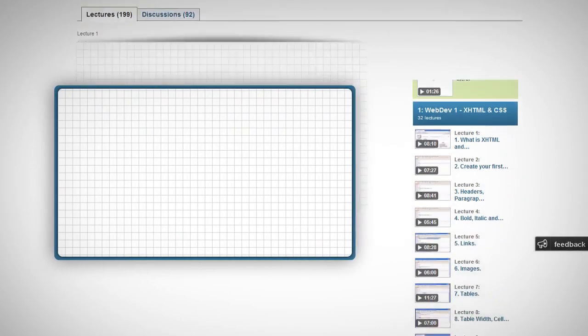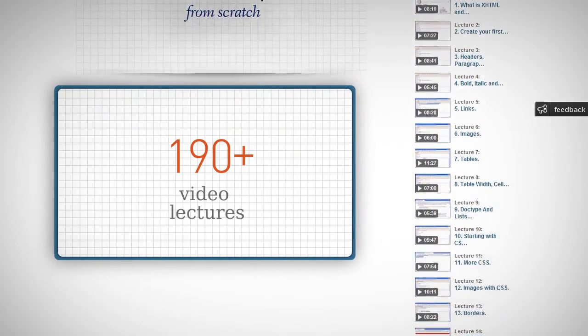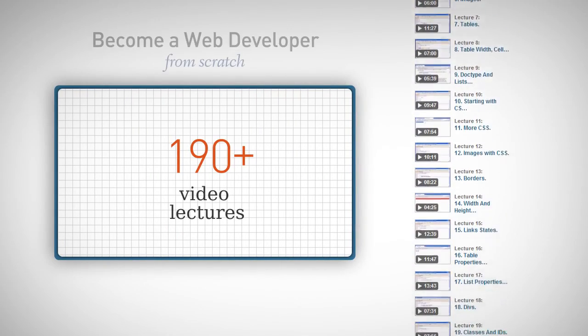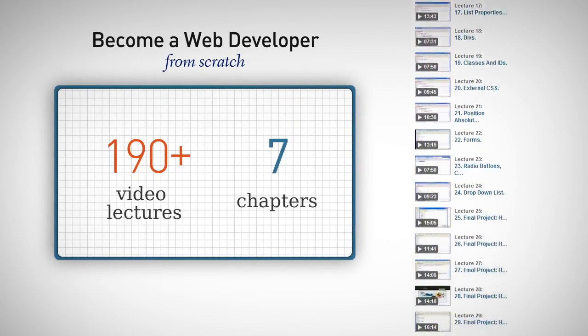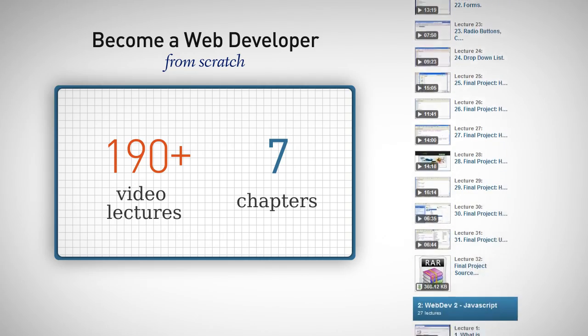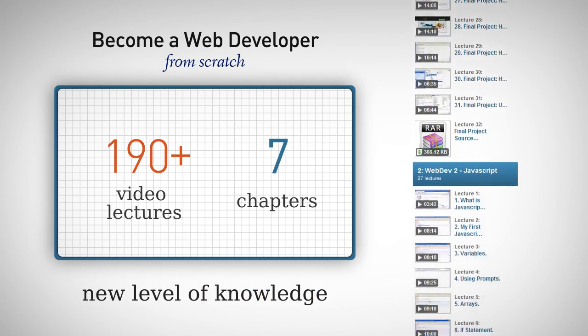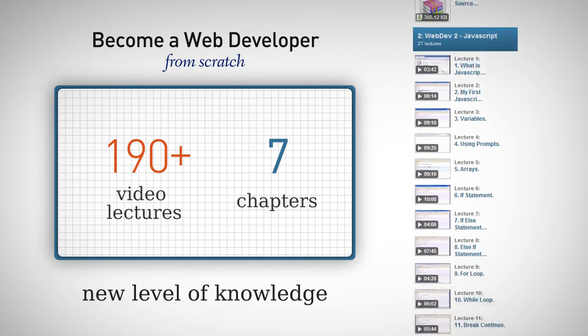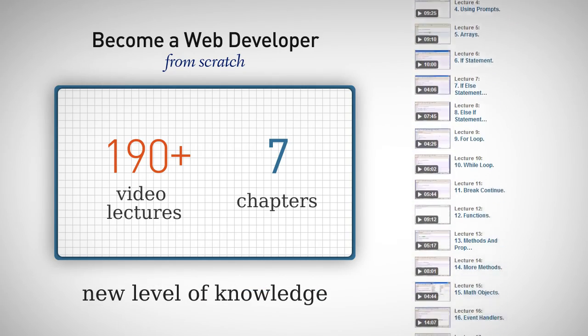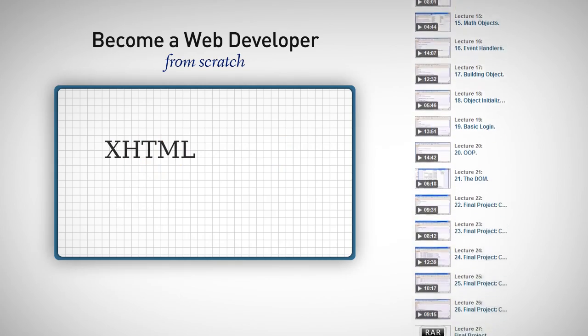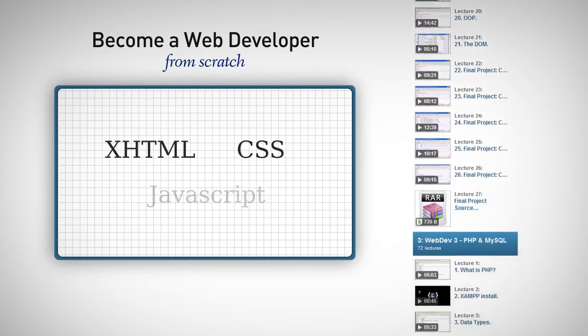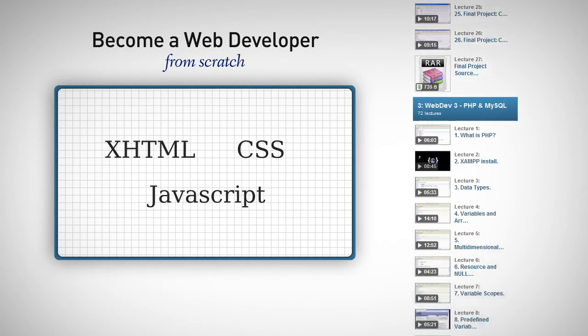The full course has more than 190 video lectures, divided into 7 chapters. Each chapter will give you a new level of knowledge in web development. We'll start from the basics with XHTML, CSS, and JavaScript,